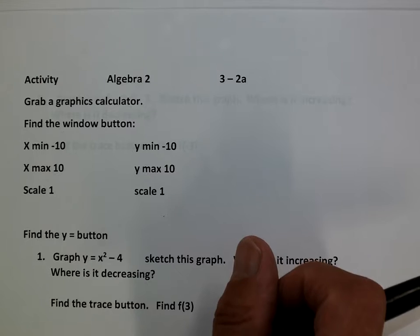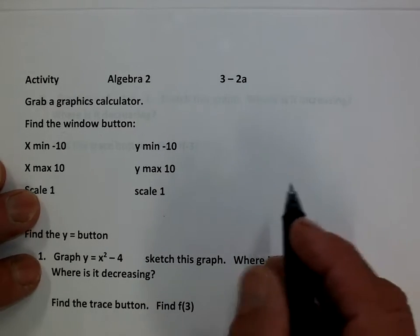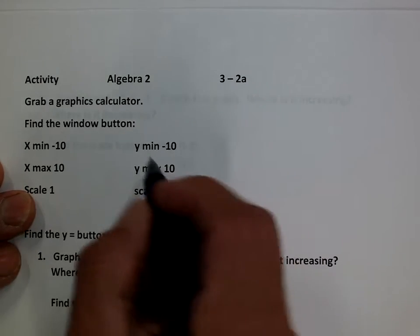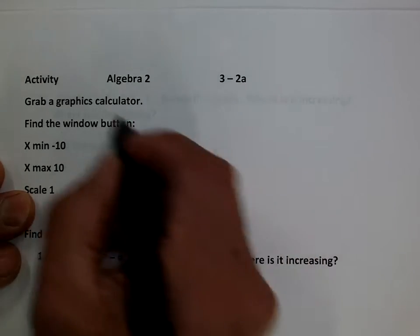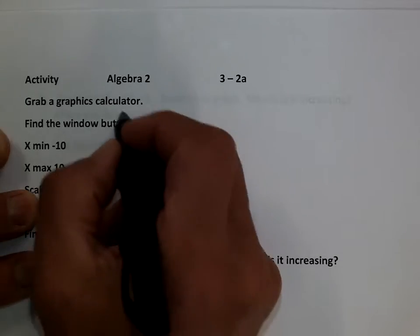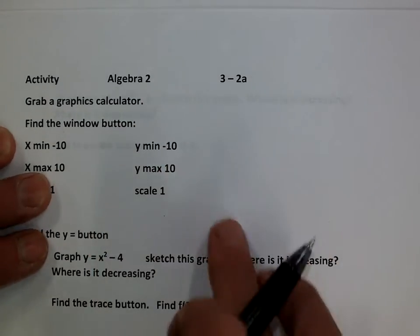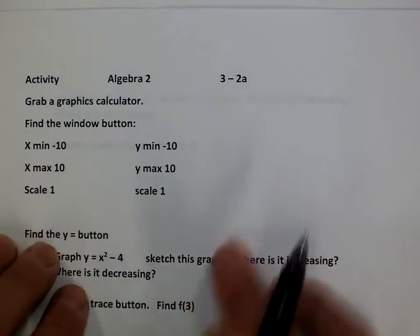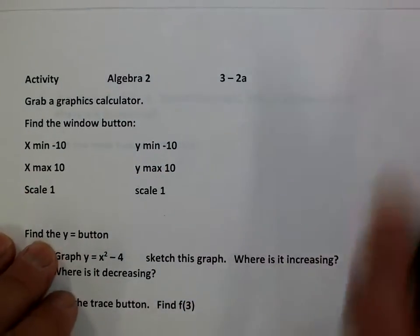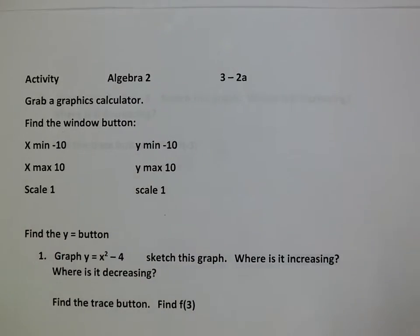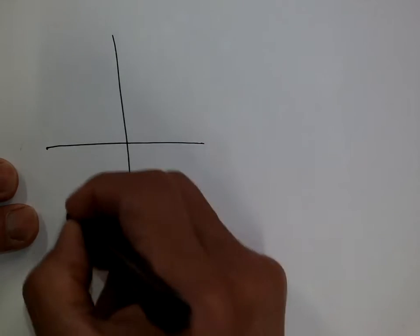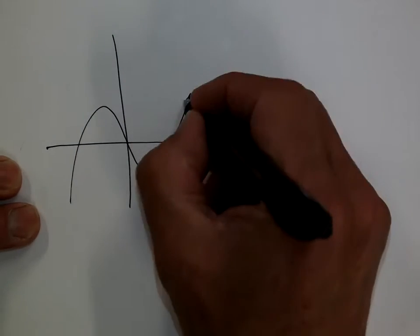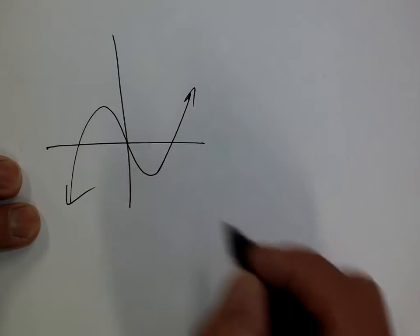So, first of all, today we're in section 3-2 and we're talking about polynomials again. What we're going to do is take a look at what the polynomial graphs look like, because polynomials are — believe it or not — these curvy graphs.